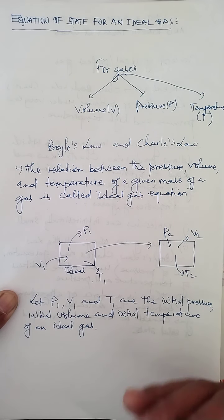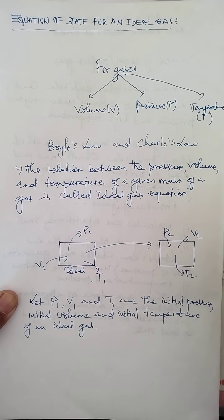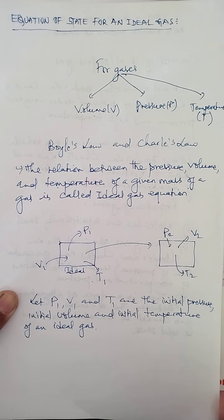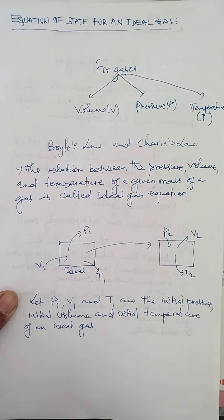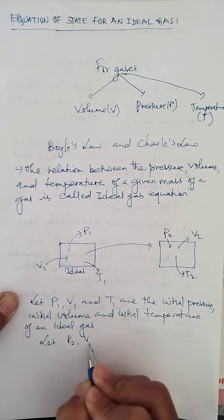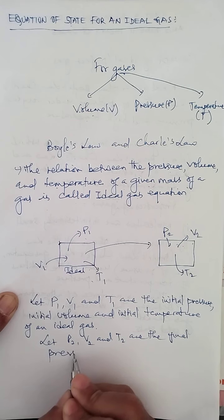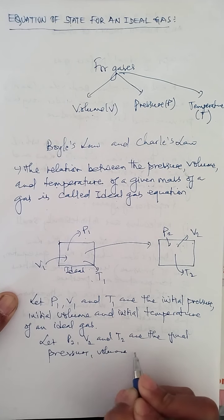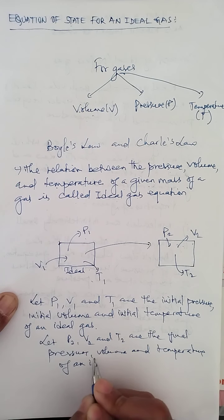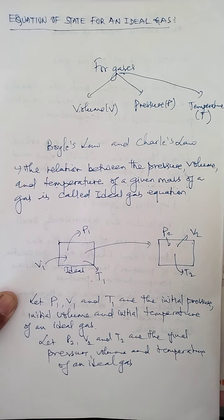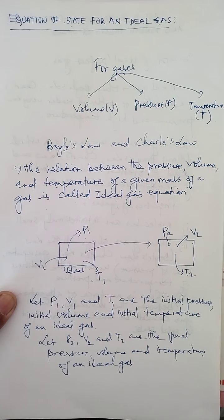To derive the ideal gas equation we cannot derive it directly; we have to derive it in two steps — one by keeping temperature constant and another by keeping pressure constant. Our main goal is to change volume from V1 to V2, pressure from P1 to P2, and temperature from T1 to T2. P2, V2, and T2 are the final pressure, volume, and temperature of the ideal gas. We follow two steps: one at constant temperature and one at constant pressure.